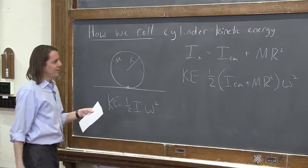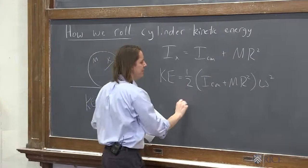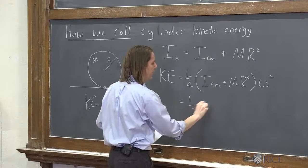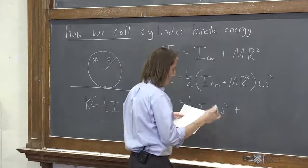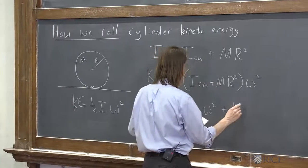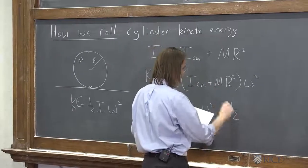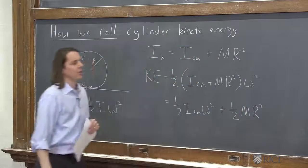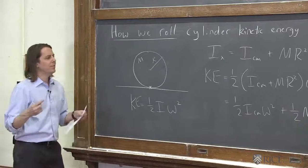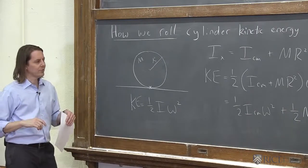All right, so what we would then say is this is 1/2 I_cm ω² plus, and then for this term, we'll say 1/2 m r². But for this term, let's replace ω with the value related to the velocity of the center of mass.